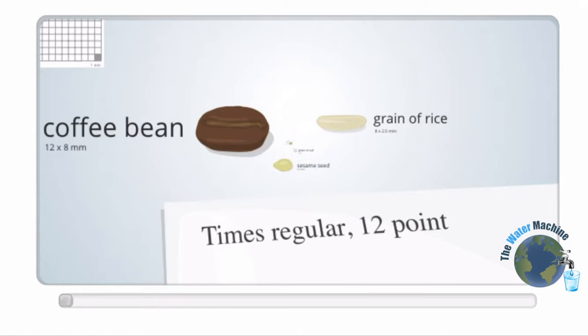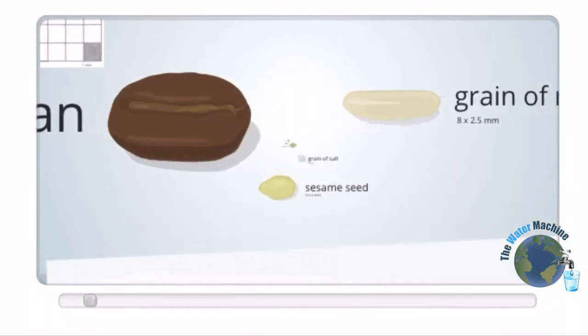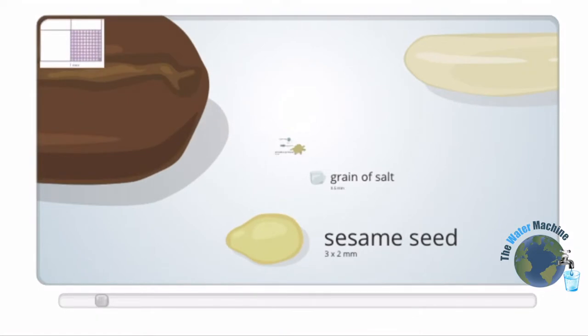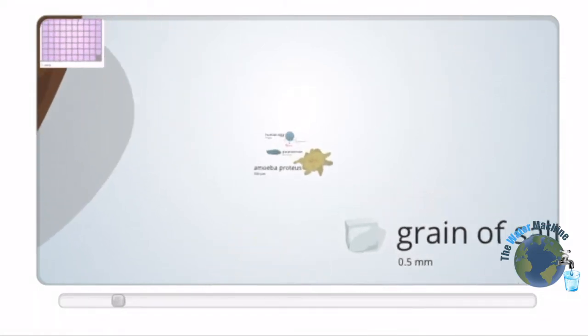First off, we start with a coffee bean, which is about 12 millimeters. Then, a grain of rice. Then a sesame seed, which is about 3 millimeters. Then a grain of salt at a half a millimeter.